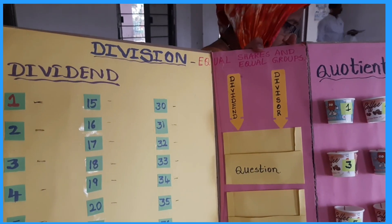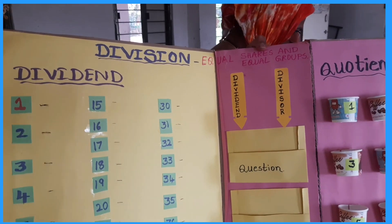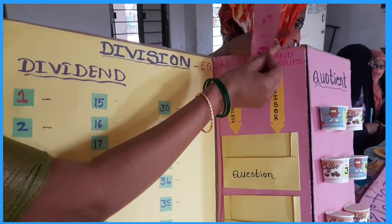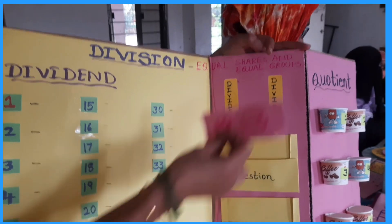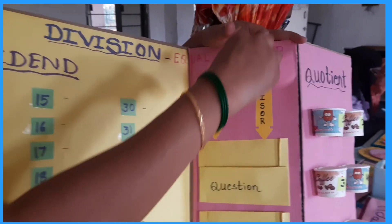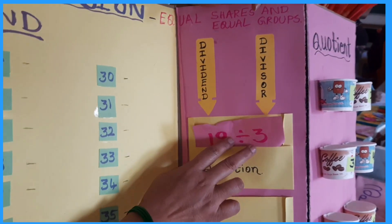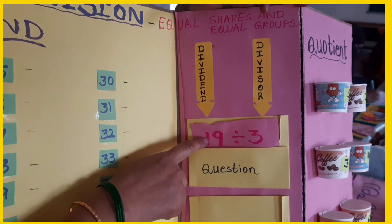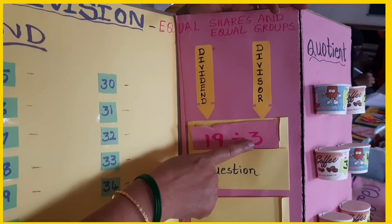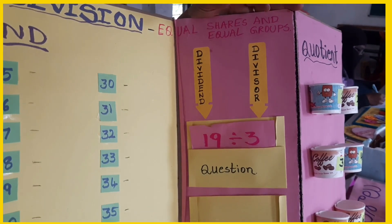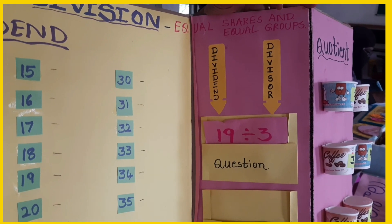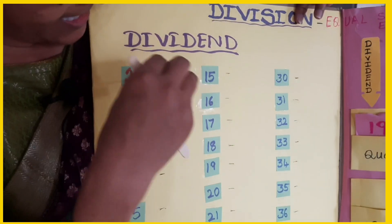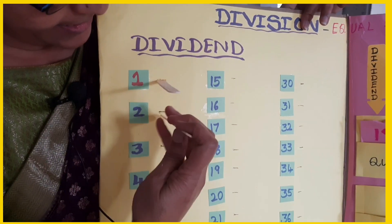The question is 19 divided by 3. Here 19 is the dividend and the divisor is 3. We take 19 sticks and put these sticks here — 19 sticks.